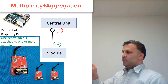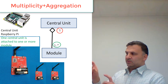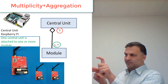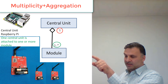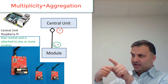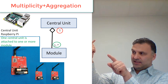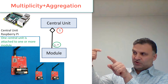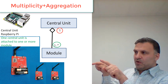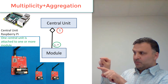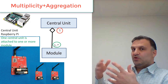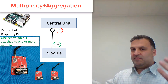If you look at the green circle, the interpretation is: we talk about the other side — one central unit is related to how many modules? One or more. The notation 1..* means one, two, three, four, five, and so on.